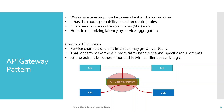What are the common challenges of adopting the API gateway pattern? Service channels or client interfaces may grow eventually — you can have more additions of client applications. As they grow, that causes the API gateway to become more 'fat' because it's a single component that must handle different channel-specific requirements. At one point, it again becomes a monolithic component, handling all client-specific logic within it. These are the common challenges.